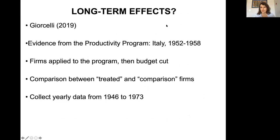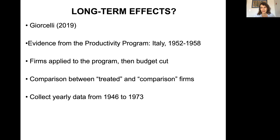What are the long-term effects of managerial practices adoption? Randomized control trials are only able to follow firms over a limited number of years after the experiment. So in order to answer this question, Giorcelli turns to economic history and uses evidence from a unique historical episode — the Productivity Program, implemented under the umbrella of the Marshall Plan intervention, and specifically in Italy, sponsored between 1952 and 1958.